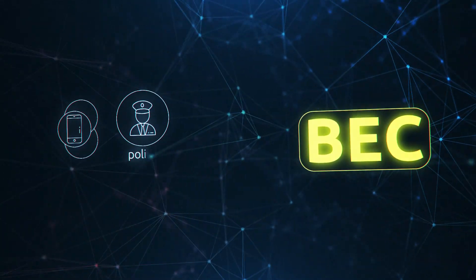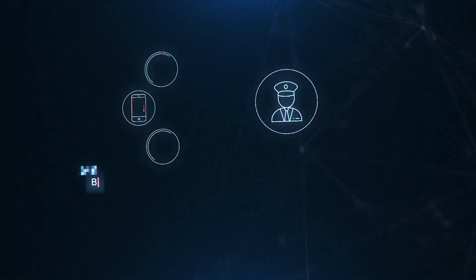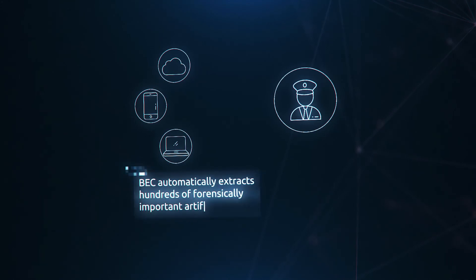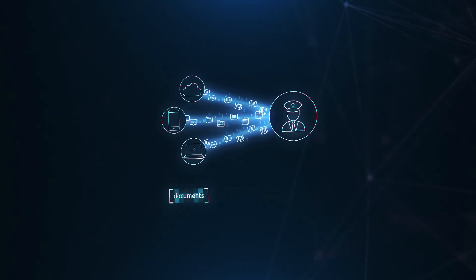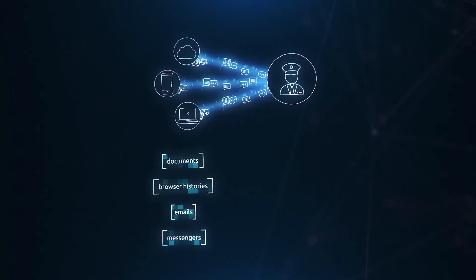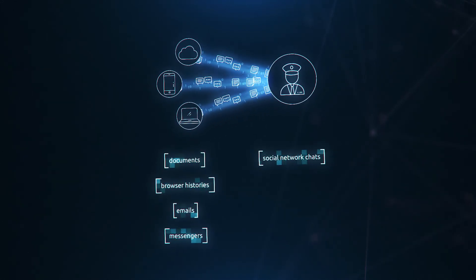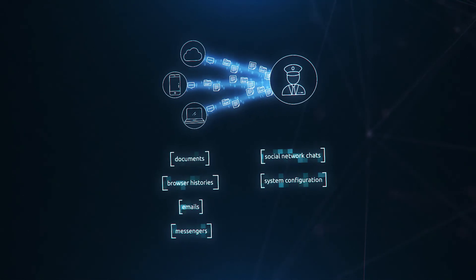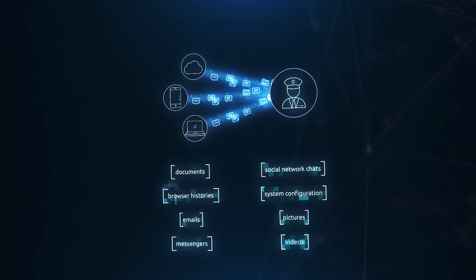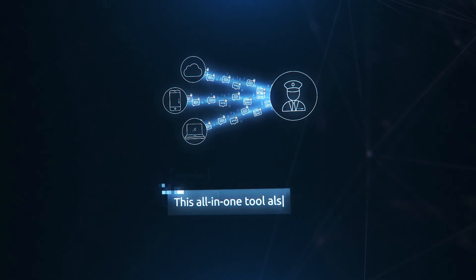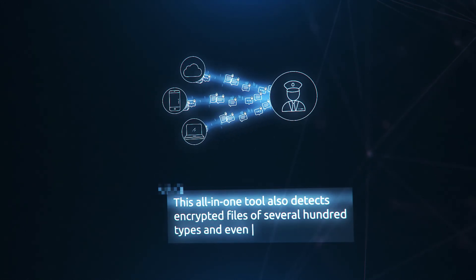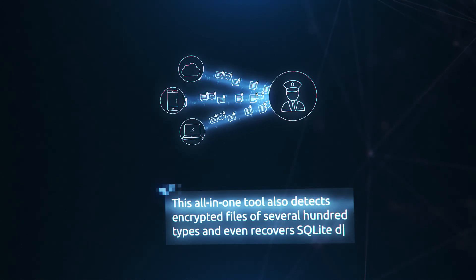The out-of-the-box analysis offered by BEC automatically extracts hundreds of forensically important artefacts such as documents, browser histories, emails, communications in instant messengers and social network chats, system configuration and details, pictures and videos. This all-in-one tool also detects encrypted files of several hundred types and even recovers SQLite data.